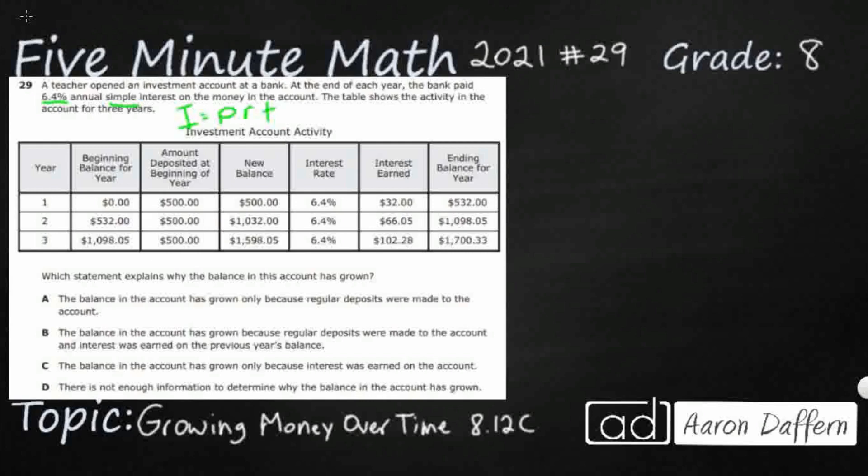All right, and we're showing the activity of the account for three years and looking for a statement as to why the balance has grown. So we're looking for a true statement. So let's take a look at our table here. What's going on? So year one, at the beginning of the year, we started with nothing.